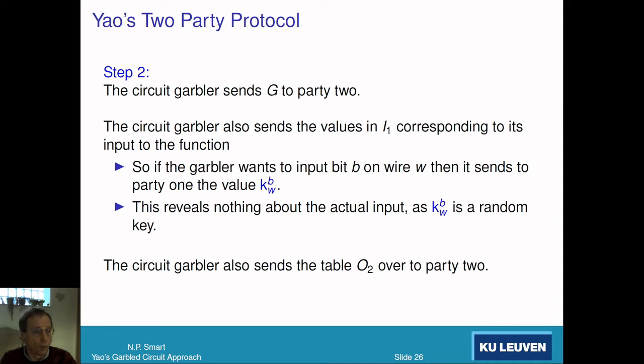In step 2, the garbler sends all those gates over to the evaluator. They also send over the values corresponding to their inputs. If one of the wires in their input is wire W and they want to send the bit B, they send the wire label K_W^B for the specific value of B. This reveals nothing about the actual input value because K_W^B is just some random piece of nonsense. The circuit garbler also sends over the output wire table O2.